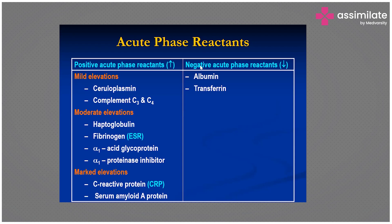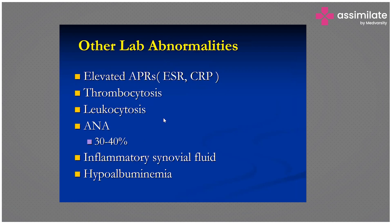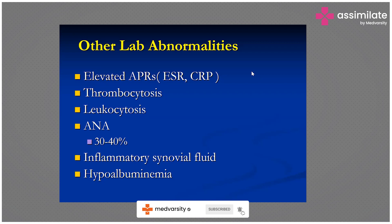Other lab abnormalities include: elevated ESR and CRP, thrombocytosis, leukocytosis, ANA positive in 30–40%, and hypoalbuminemia. Also, inflammatory synovial fluid is a finding. How would you confirm inflammatory synovial fluid? You need to perform synovial fluid aspiration.